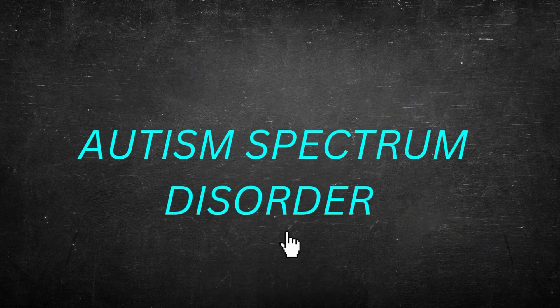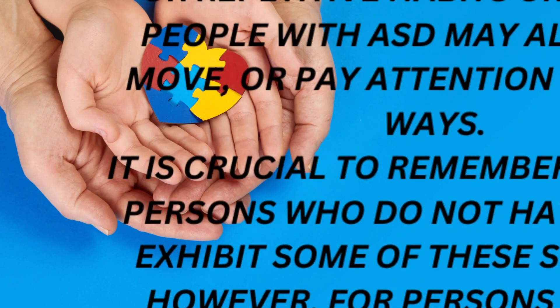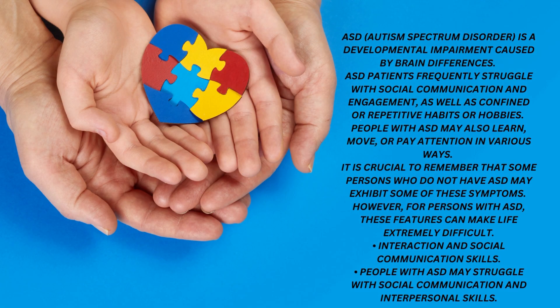Autism Spectrum Disorder, ASD, is a developmental impairment caused by brain differences. ASD patients frequently struggle with social communication and engagement, as well as confined or repetitive habits or hobbies. People with ASD may also learn, move, or pay attention in various ways.